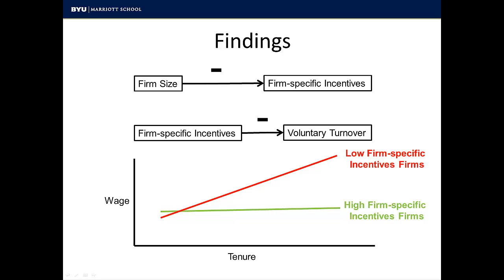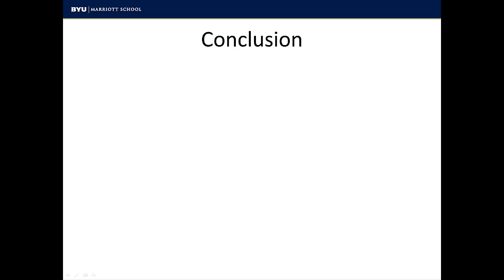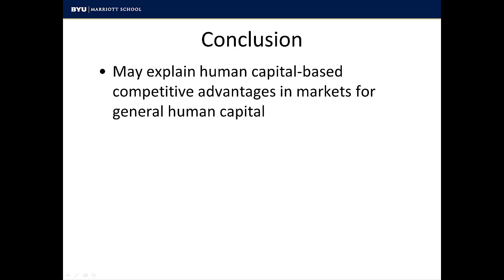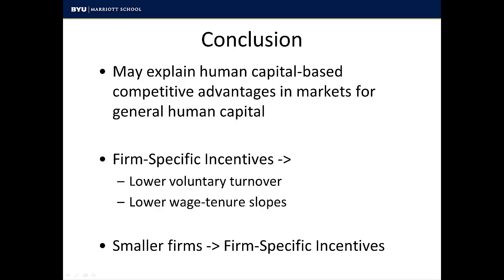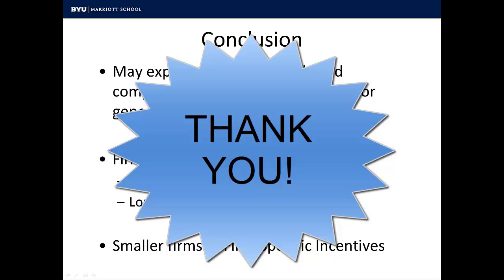In other words, these firms offer lower monetary increases over time as tenure increases. These findings suggest that firms can, in fact, realize some human capital benefits from these incentives. In summary, I argue that firm-specific incentives may explain human capital-based competitive advantages even in markets where traditional strategy theory predicts that such advantages should be difficult if not impossible. I empirically show that these incentives facilitate lower wage tenure slopes and lower dysfunctional turnover rates, and I also show that small firms offer significantly more highly firm-specific incentives than their larger rivals. And with that, I'll turn the podium back over to someone in the flesh. Thank you.